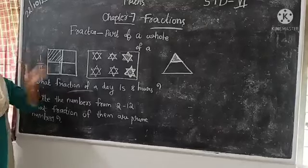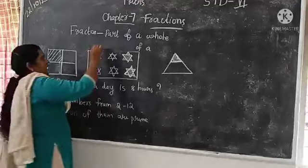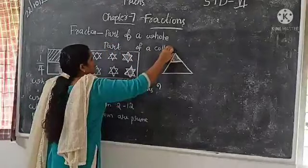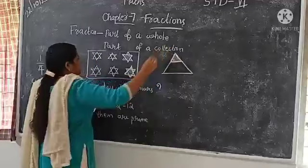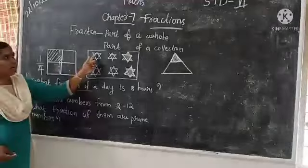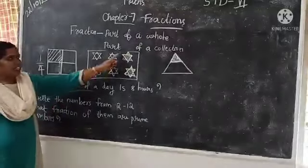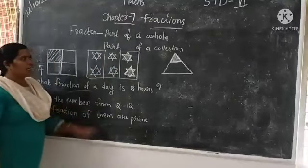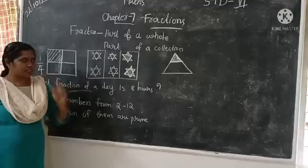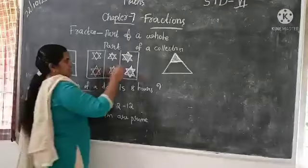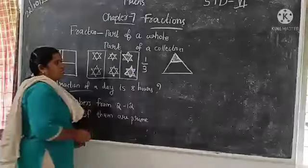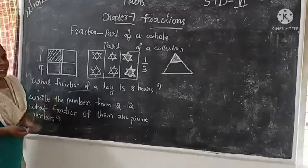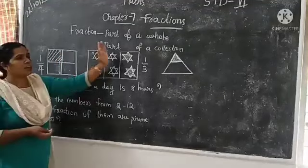Now, we have a part of a whole, we have a part of a collection. Part of a collection. You know, here are 6 stars, I shaded 2 of them. So, here are 3 parts, we have 1 part, we have 2 stars, we have 1 by 3 of the stars, 1 by 3 of the stars are shaded. So, fraction is a part of a collection.